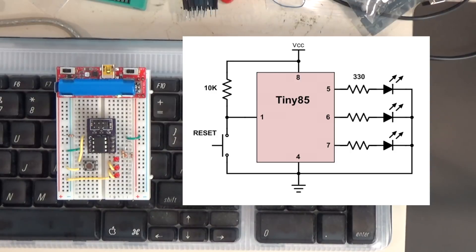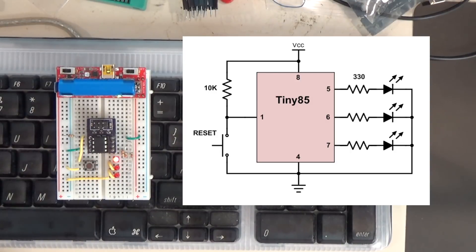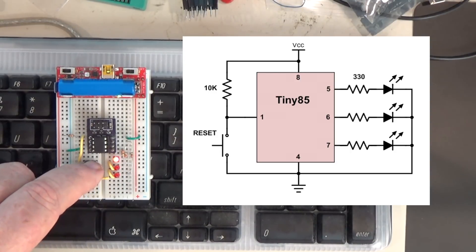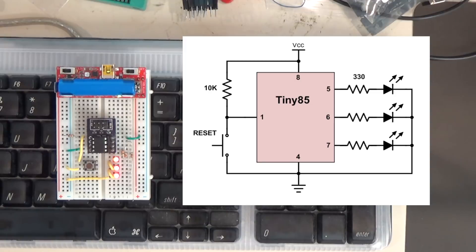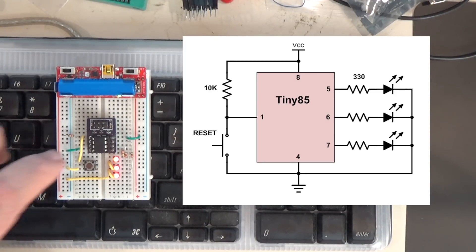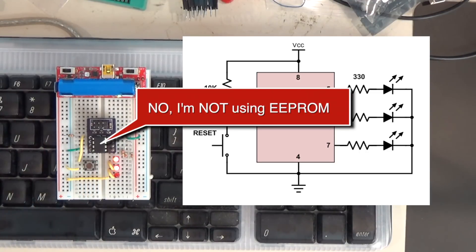Notice that the LEDs do not light up, but I press the button once and the first LED lights up. As I continue to press it in sequence, it continues to count up. Now all I'm doing is forcing a reset on the ATtiny85. So how is it able to do this? How is it able to remember the previous state and count up?